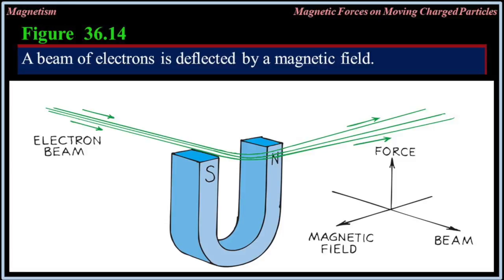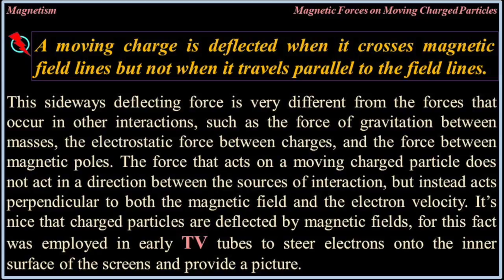A beam of electrons is deflected by a magnetic field. A moving charge is deflected when it crosses magnetic field lines but not when it travels parallel to the field lines. This sideways deflecting force is very different from the forces that occur in other interactions such as the force of gravitation between masses, the electrostatic force between charges, and the force between magnetic poles. The force that acts on moving charged particles acts perpendicular to both the magnetic field and the electron velocity. This fact was employed in early TV tubes to steer electrons onto the inner surface of the screen and provide a picture.